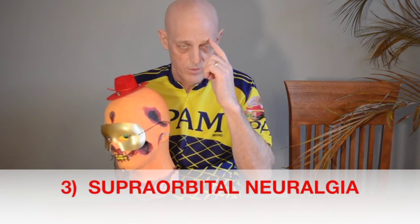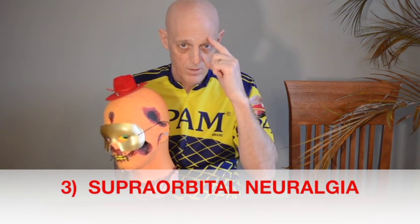The second neuralgia is supraorbital neuralgia. There's a nerve here that comes out in a little notch you can feel, running up here. If that gets inflamed for whatever reason, you tend to have headaches up in this area. It can be kind of sharp at times.